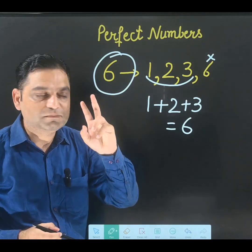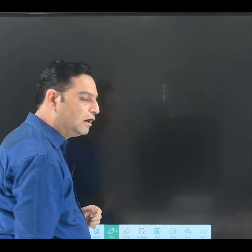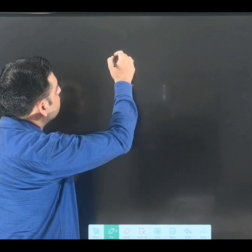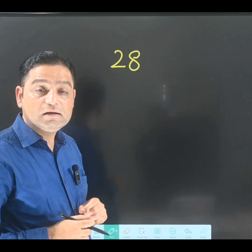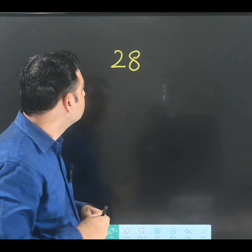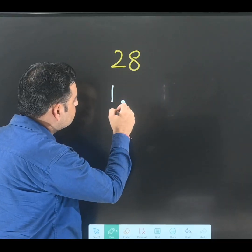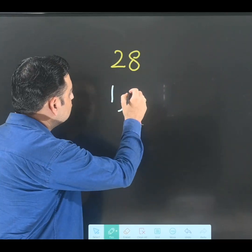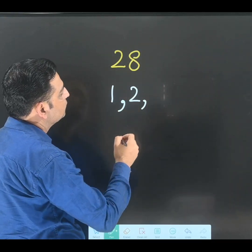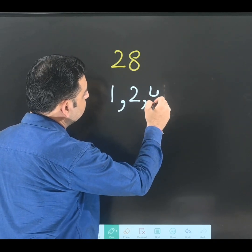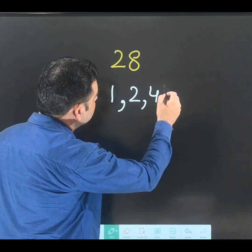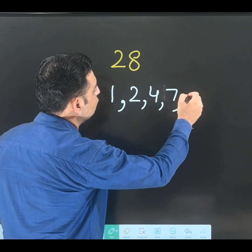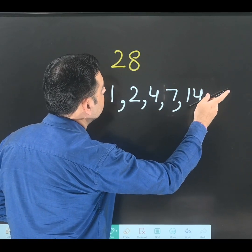I'm going to talk about the second perfect number now. After 6, the second perfect number is 28. Why 28? Let us write its factors. 28 comes in the table of 1, 2, 4, 7, 14, and 28.